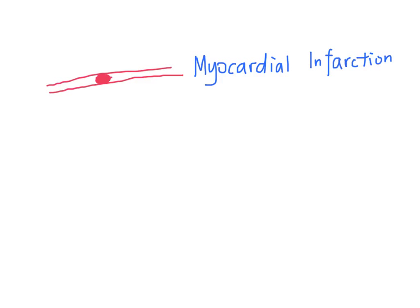ACS, or acute coronary syndromes, really means a few different clinical diagnoses. They are all caused by blocked coronary arteries. It can cause irreversible damage to the myocardial cells, or myocardial infarction. If the myocardial infarction shows ST elevation on the ECG, it is known as ST elevation MI, or STEMI. And if it does not show ST elevation on the ECG, it is known as a non-STEMI.